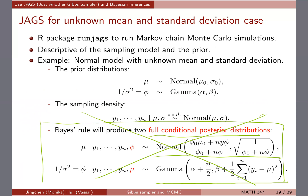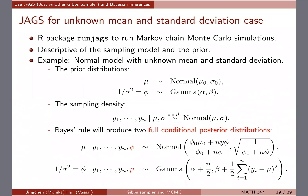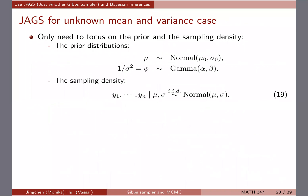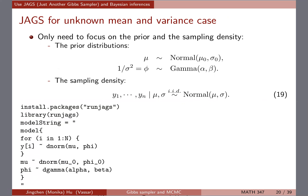JAGS can help you bypass that derivation and still run your Gibbs sampler. So if you don't do the derivation but still want to run the code, just forget about the full conditional posterior distribution and focus on the prior and the sampling density. You still need to know those — in this case, that the data follows a normal and the prior distributions you want. As long as you specify the sampling density and the prior, the package will run its own Gibbs sampler and give you the output directly.